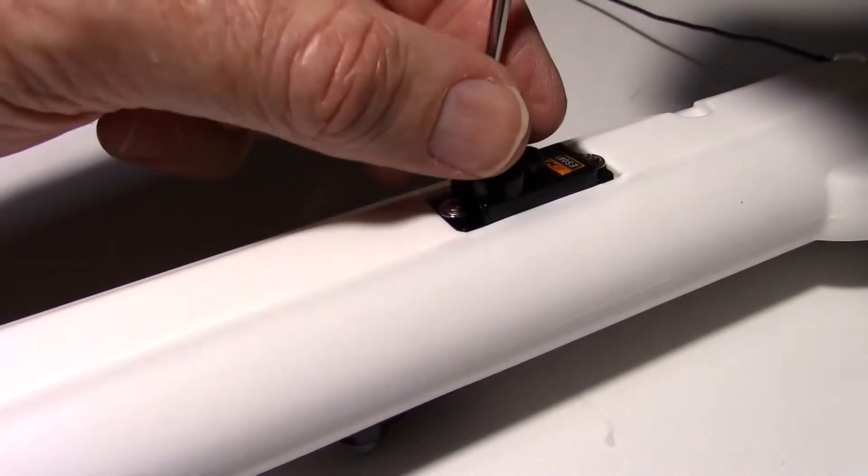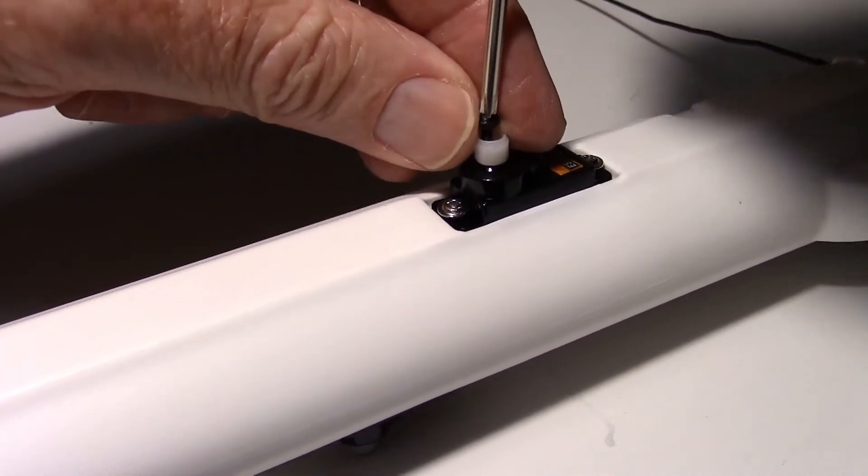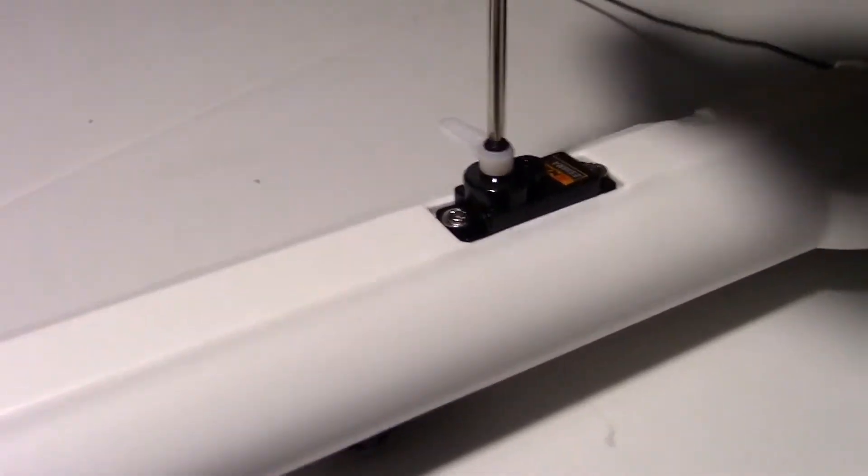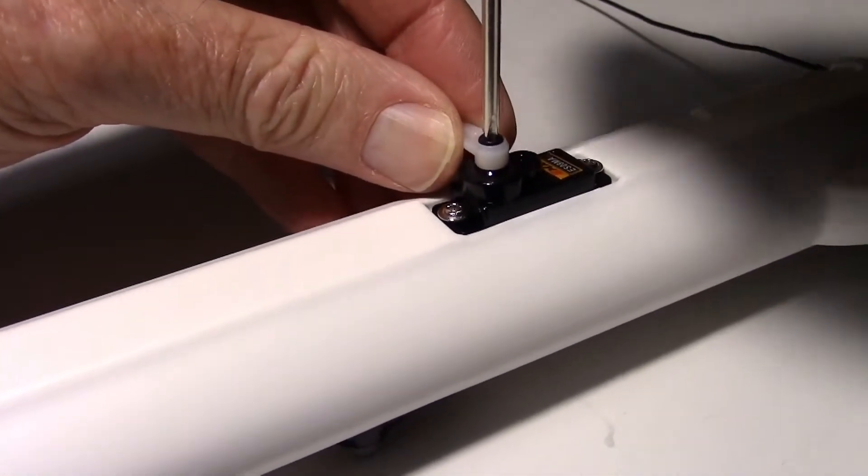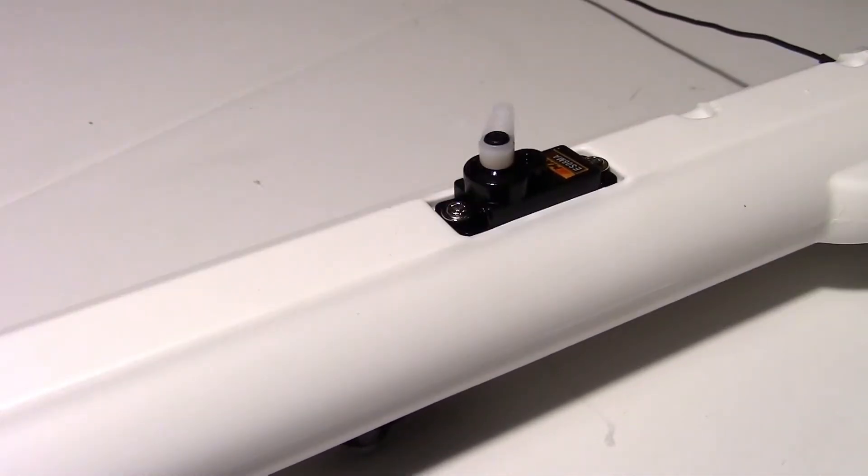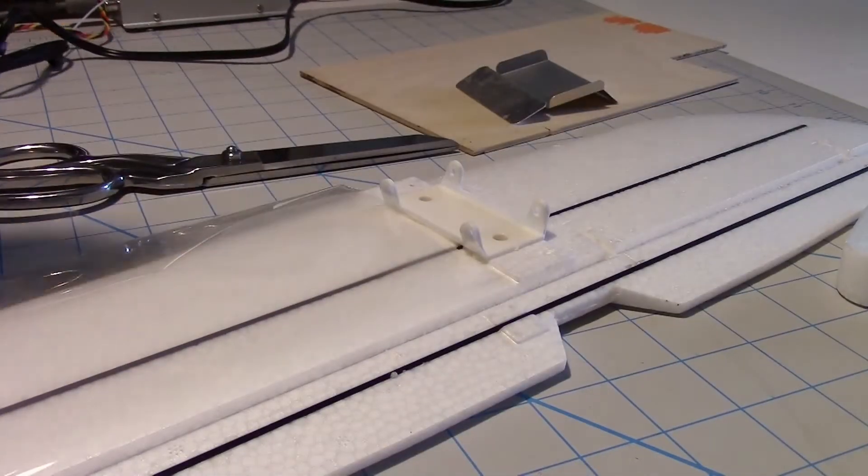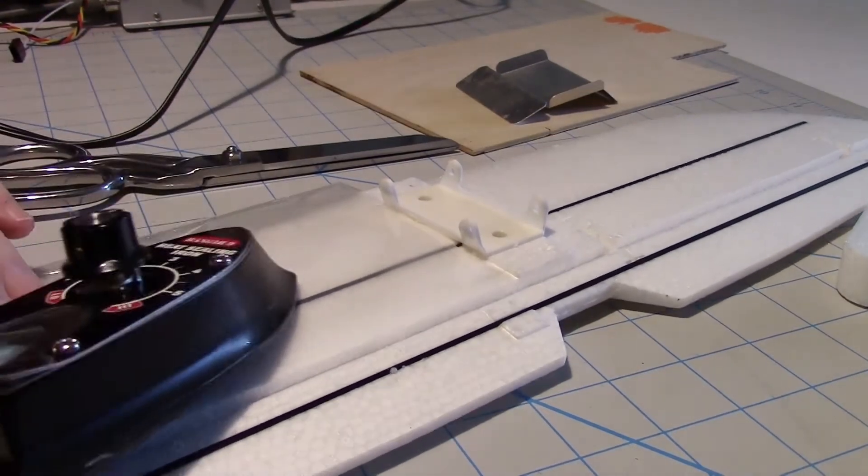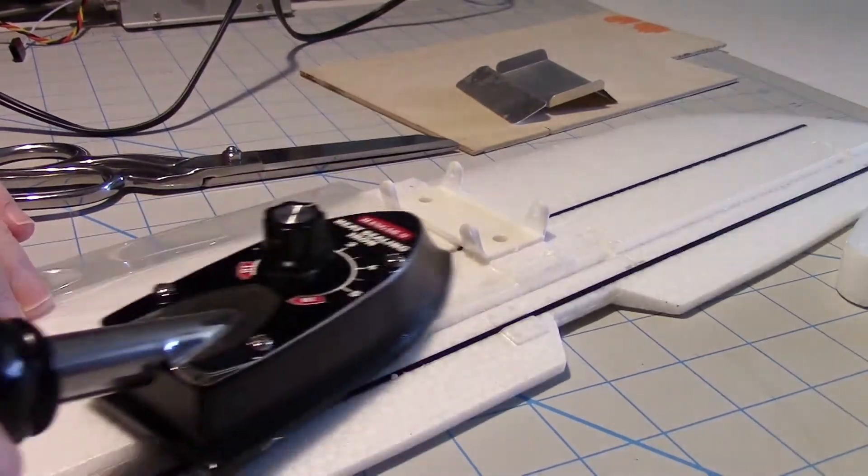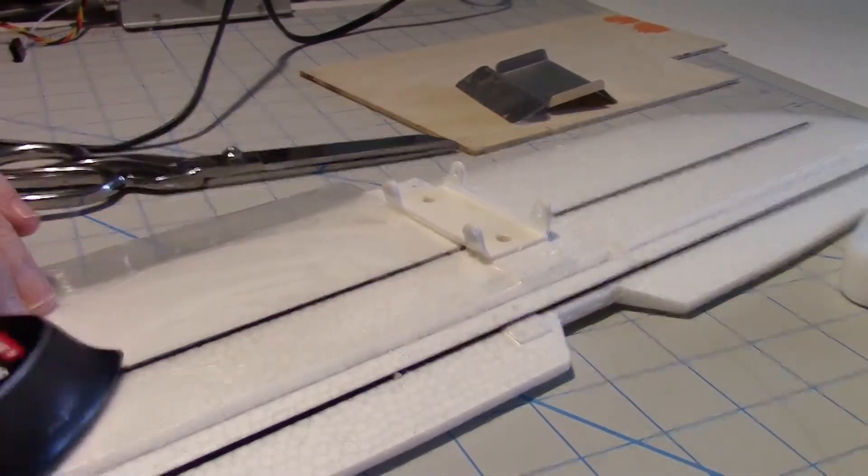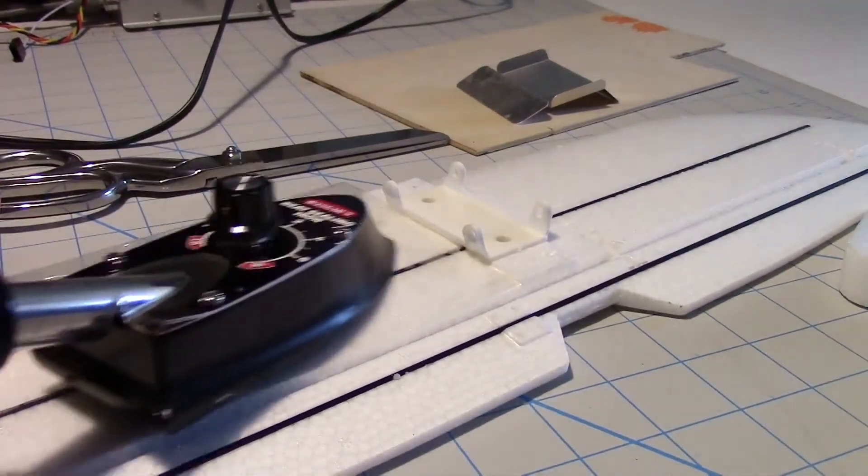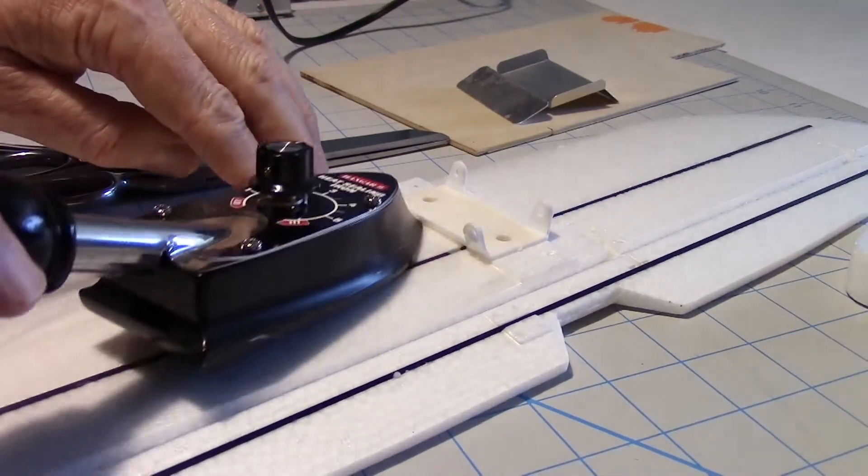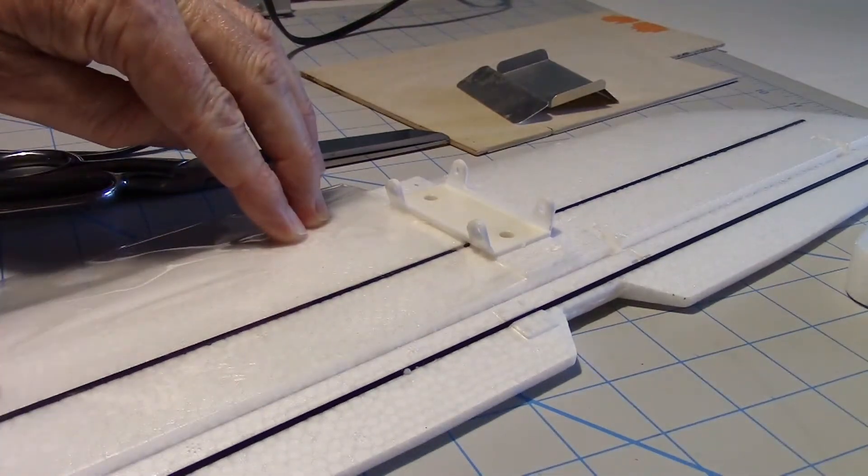I'm going to laminate the tail section with some of this laminating film, it's 1.7 I believe is the thickness. I won't bore you with too much of this, but I wanted to show you what I'm doing. It's pretty easy to do, just lay down the film and then iron it on. Got the setting on about halfway.